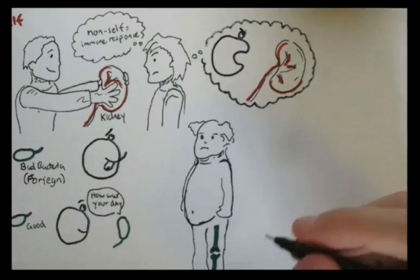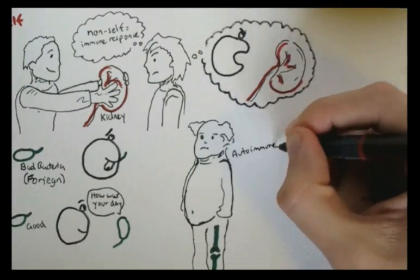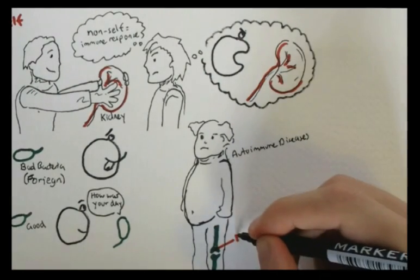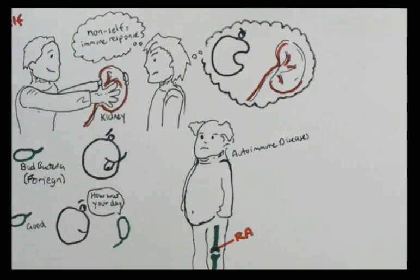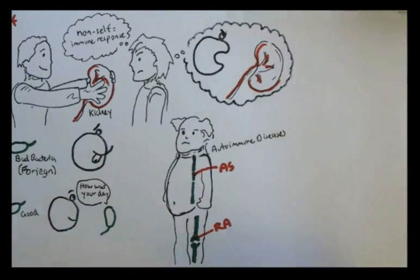You might have heard of an autoimmune disease affecting joints, such as Rheumatoid Arthritis, or RA, and one affecting the spine, called Ankylosing Spondylitis, or AS.